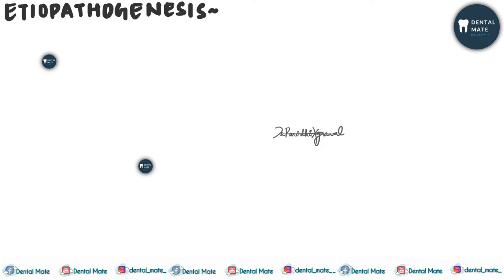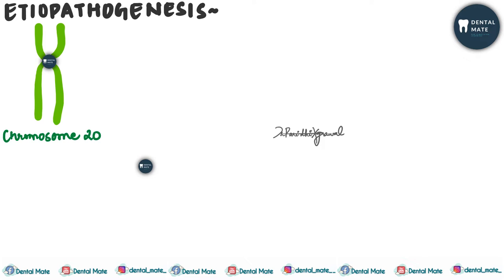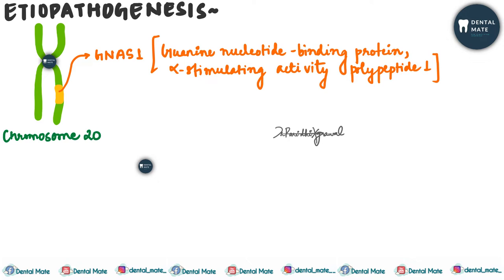What is the etiopathogenesis of fibrous dysplasia? We have a gene situated in the long arm of chromosome number 20, known as GNAS1 — the guanine nucleotide binding protein alpha stimulating activity polypeptide 1.